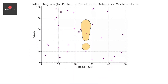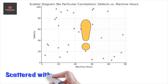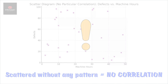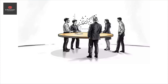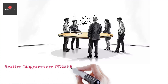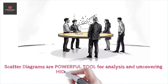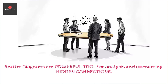By interpreting the scatter diagram, Six Sigma professionals can deduce whether changes in one factor might directly influence the other. Insight into these relationships aids in rooting out inefficiencies and optimizing processes. Ultimately, scatter diagrams are invaluable for uncovering hidden connections between variables.